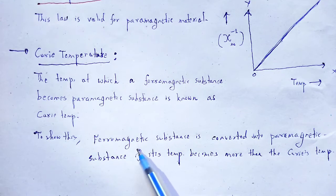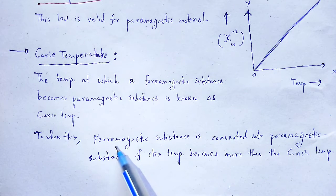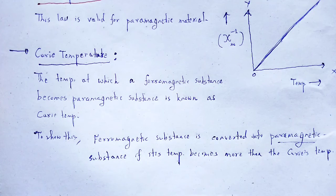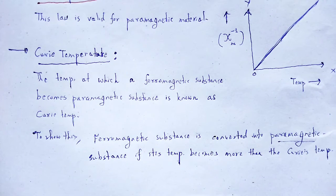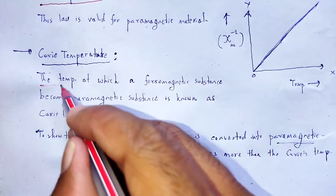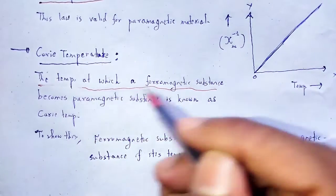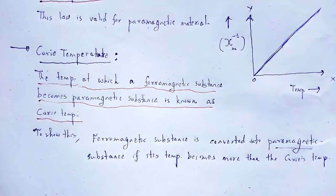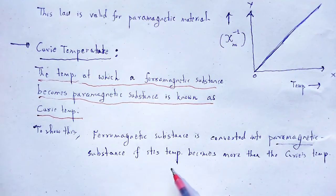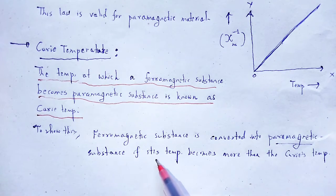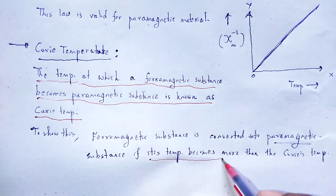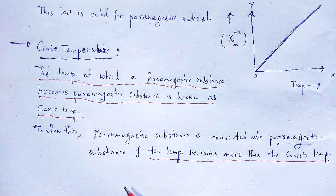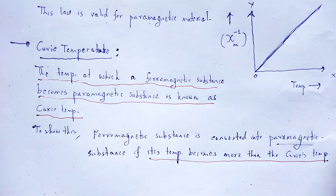Then we achieve paramagnetic substances from ferromagnetic substances. The temperature at which a ferromagnetic substance becomes a paramagnetic substance is known as Curie temperature. If its temperature becomes more than the Curie temperature, we achieve a paramagnetic substance from a ferromagnetic substance.